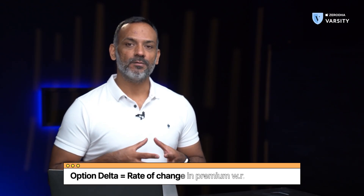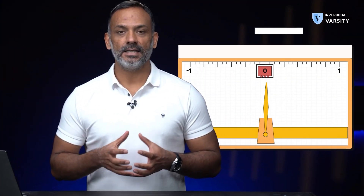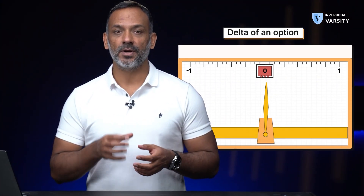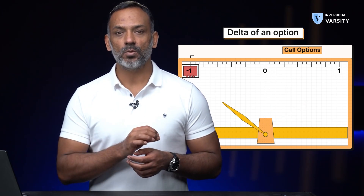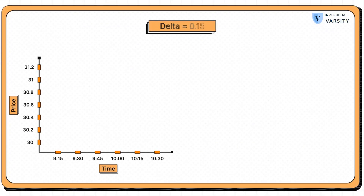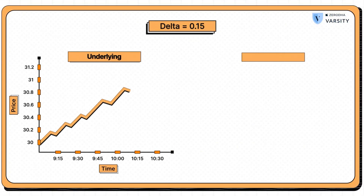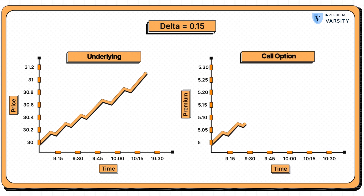In other words, delta of an option is the rate of change of premium with respect to the underlying. Delta is a number that varies from 0 to 1 for a call option, and minus 1 to 0 for a put option. For instance, if the delta of a call option is 0.15, it indicates that for every one point change in the underlying, the premium for that particular option will change by 0.15.